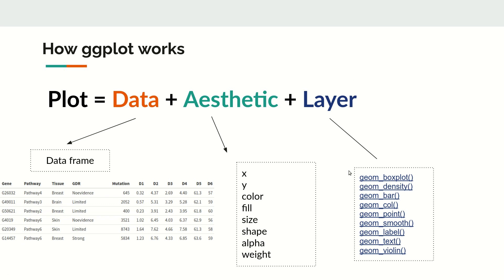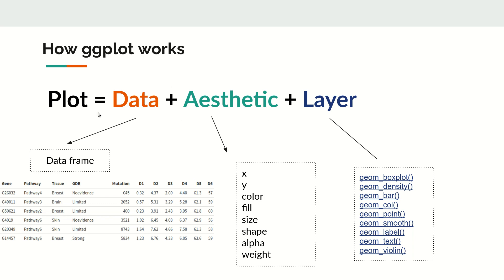We can add different layers like box plot, density plot, bar plot, column plot. For a scatter plot we use geom_point(). You can also add additional layers like a smooth line or trend line. So data + aesthetic + layer — these three together will give us the actual plot.